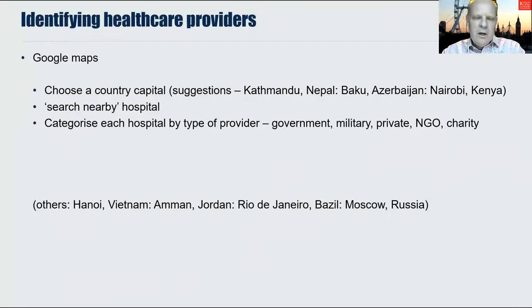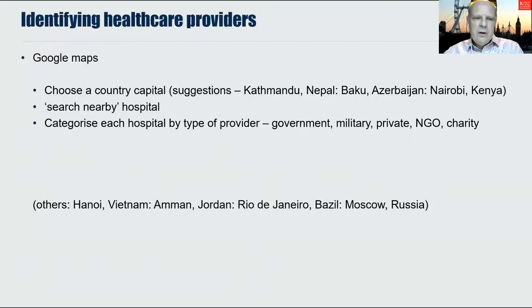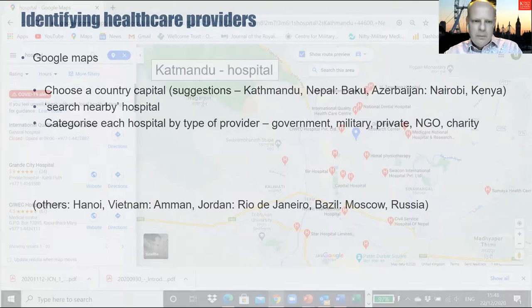Let's now examine how one might identify the different providers in this model, going back to the idea of using mapping. Why don't you conduct a Google search, choosing a country capital — I've suggested Kathmandu in Nepal, Baku in Azerbaijan, Nairobi in Kenya — and in the search nearby box type in 'hospital.' You can then categorise each hospital by type of provider, either by putting an adjective in front of the word 'hospital' or by looking at the description of each hospital.